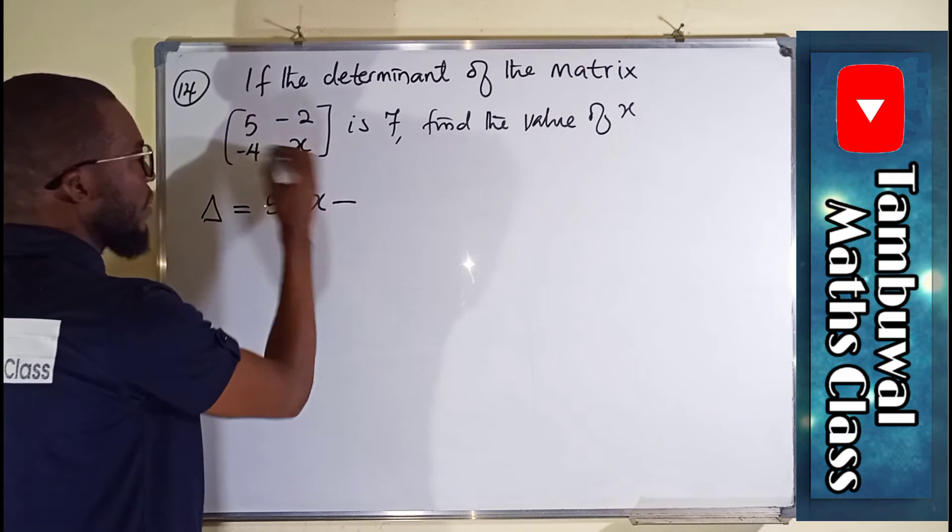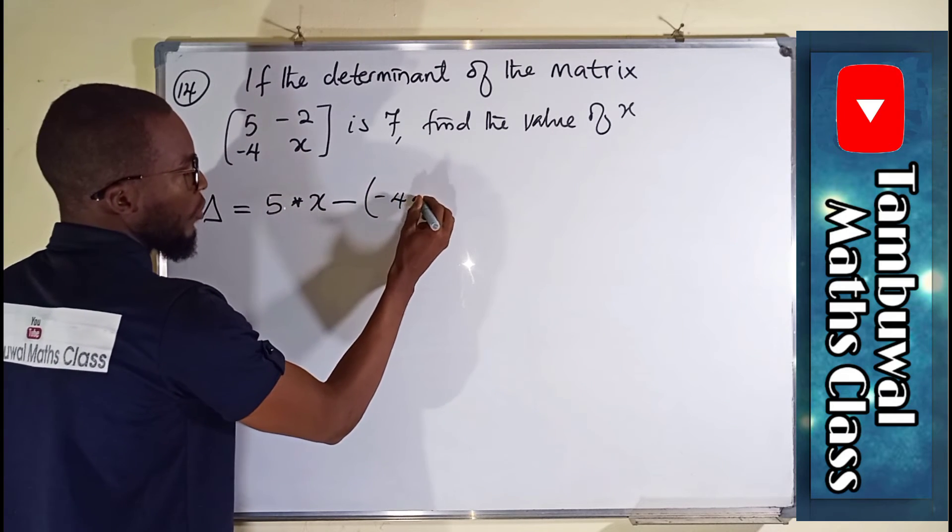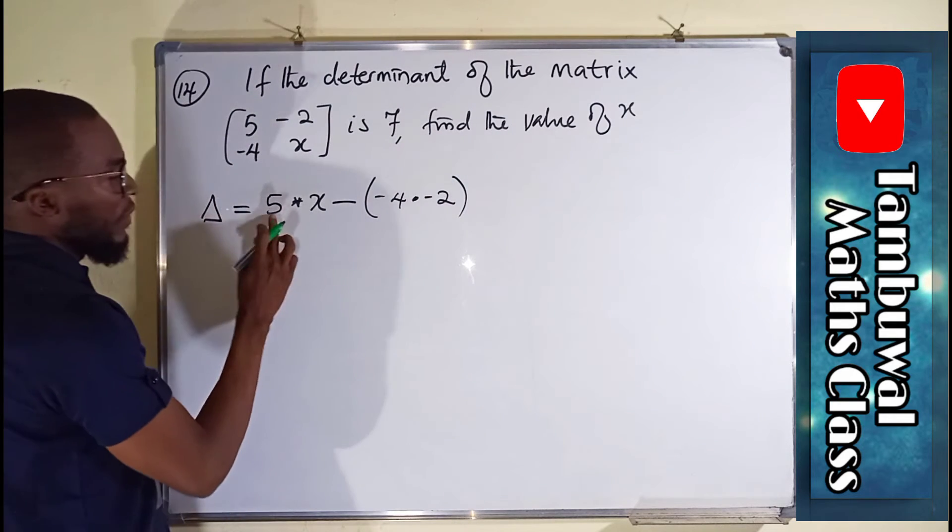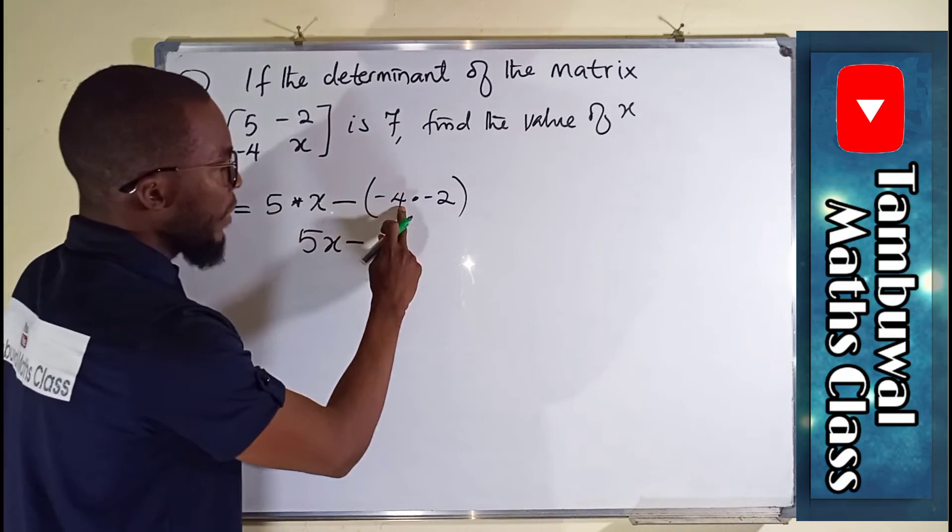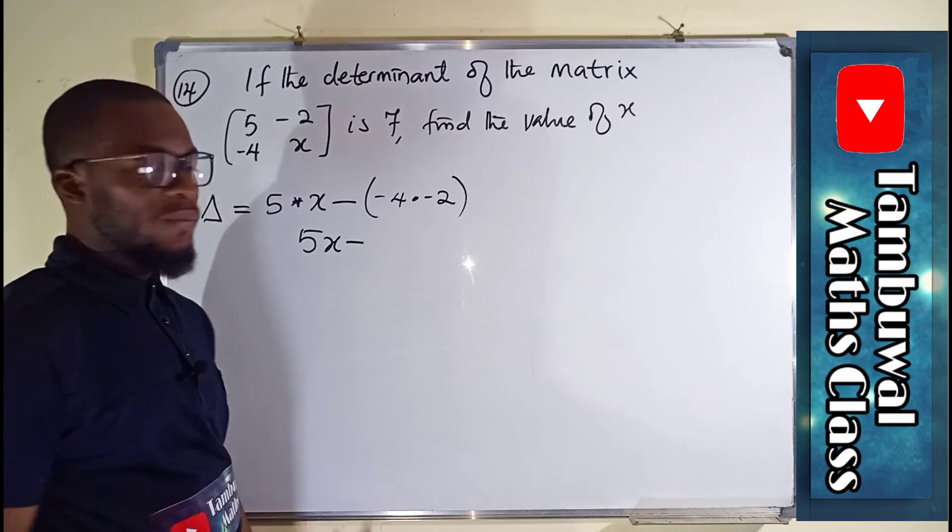5 times x is 5x. You subtract, you take the other one, negative 4, multiply by negative 2. This time, this is 5x minus, minus 4 times minus 2 is positive 8.